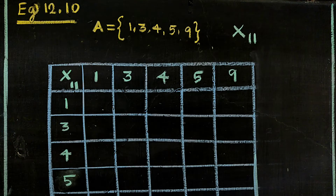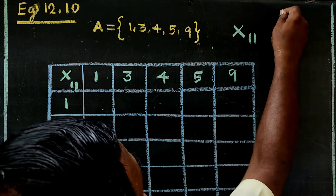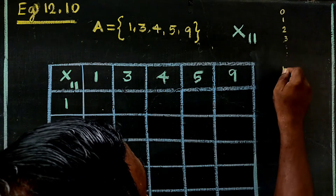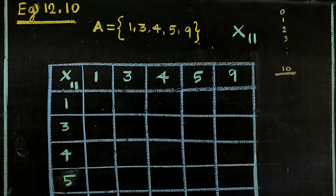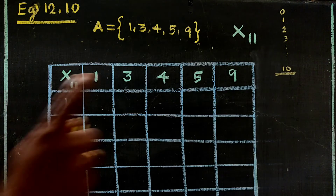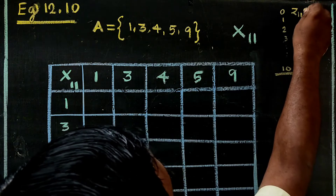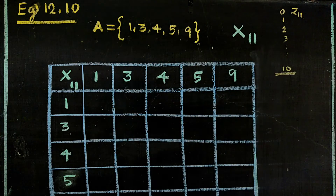If you look at this subset, every number in it, when multiplied mod 11, stays within the subset. The subset is {1, 3, 4, 5, 9}.